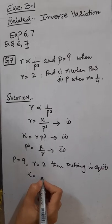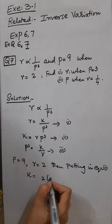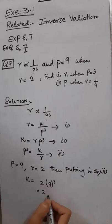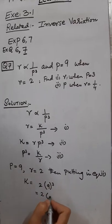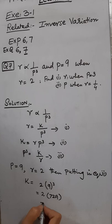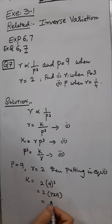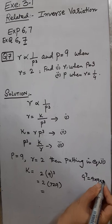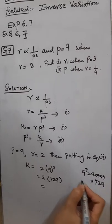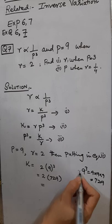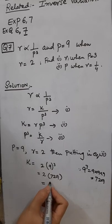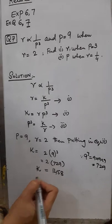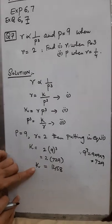The value of R is 2 and the value of P is 9. We'll take the cube of 9. So it is 2, and the cube of 9 is 729. You can find this with a calculator — 9 cube means 9 into 9 into 9, which is 729. After multiplying, K equals 1458. This is the constant ratio.